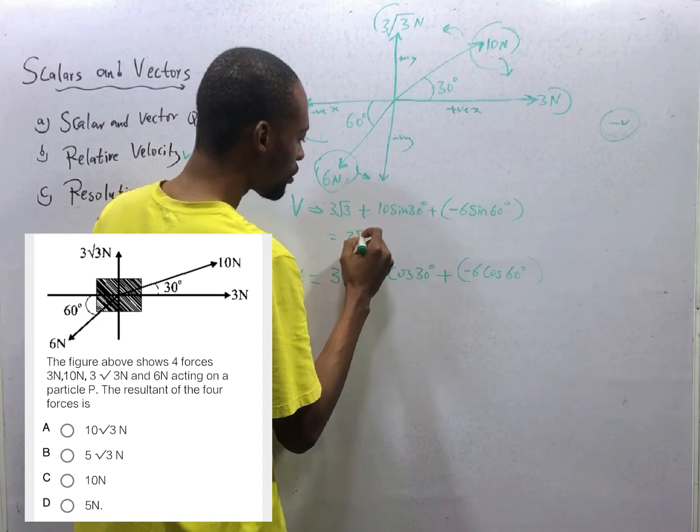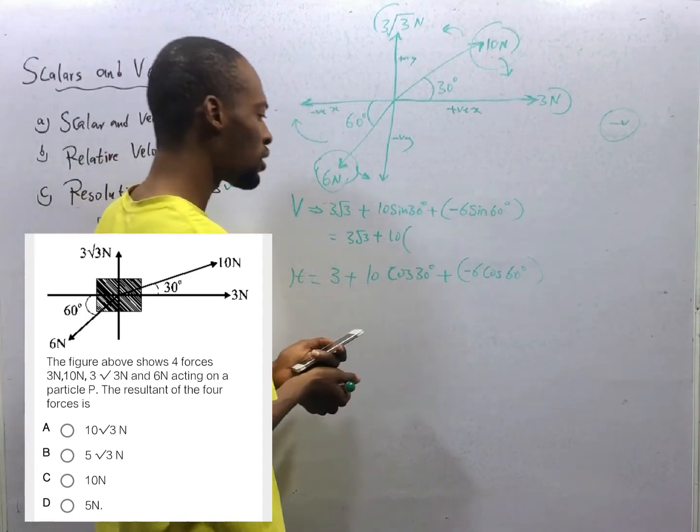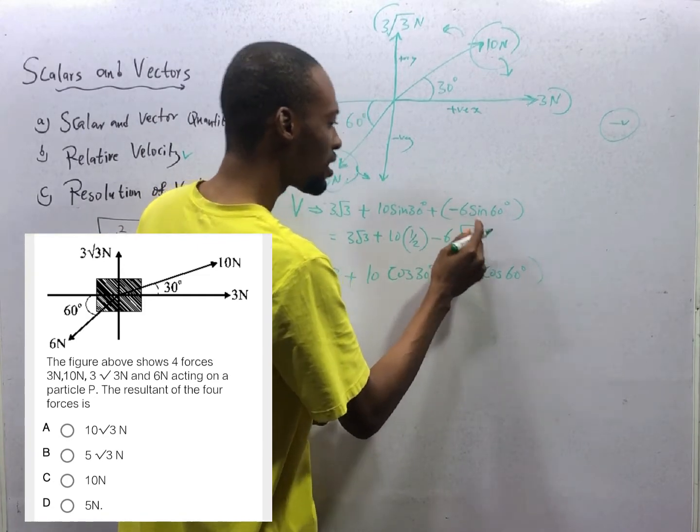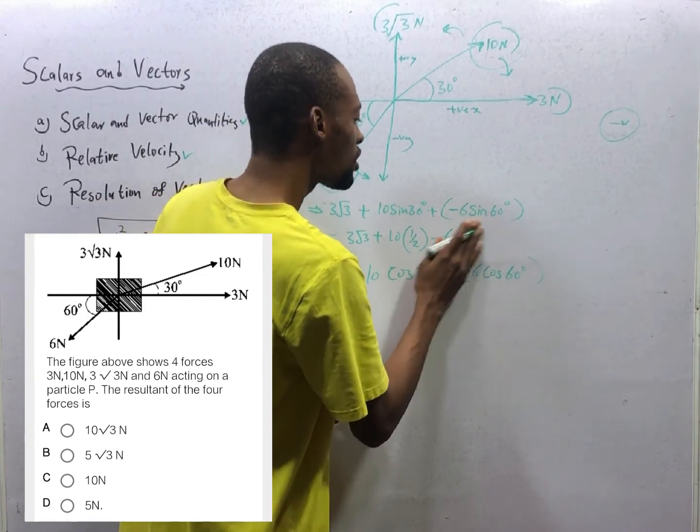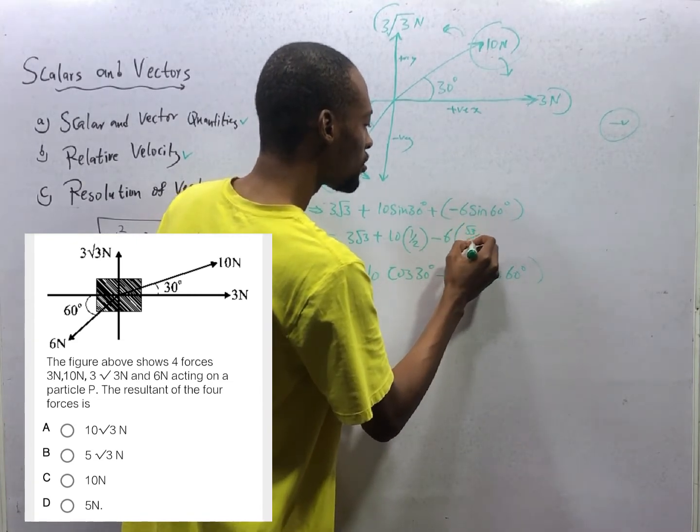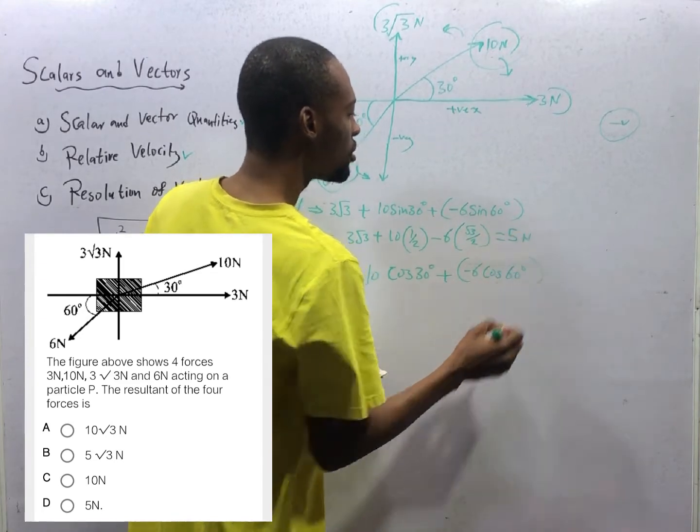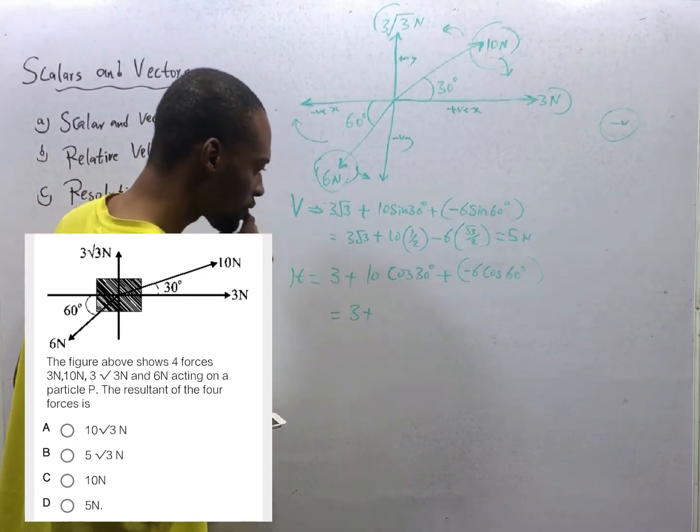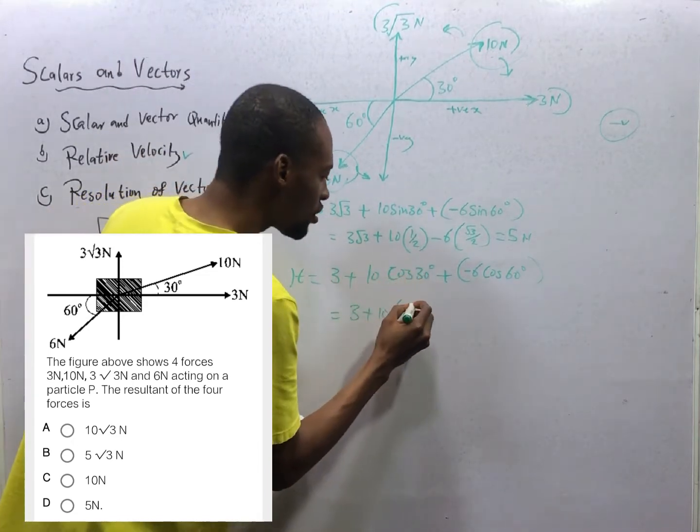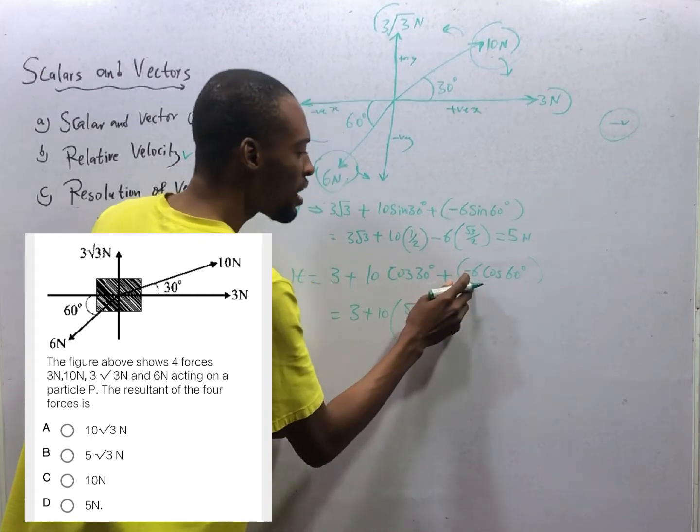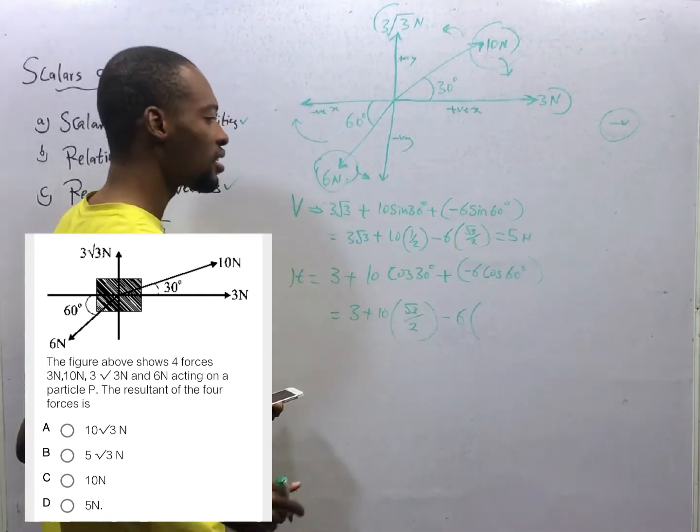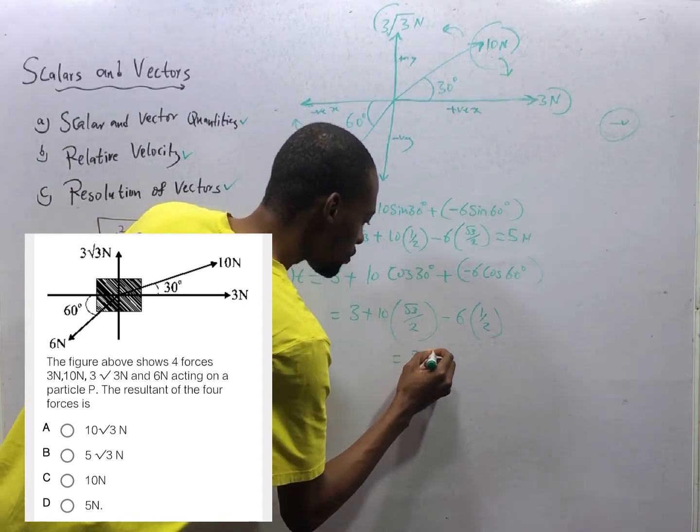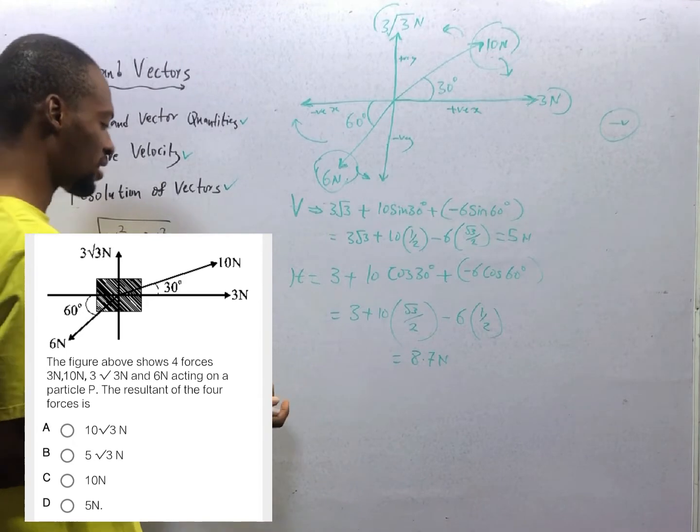So this is 3 root 3 plus 10. Sin 30 is 1 over 2. 1 over 2. Plus and minus is minus. So we have 6 times sin 60 is root 3 over 2. Root 3 over 2. This will give you equals 5 newtons. For the horizontal, we have 3 plus 10 cos 30 is root 3 over 2. Plus times minus is minus 6 times cos 60 is 1 over 2. So this is 1 over 2. This would be equals 8.7 newton.